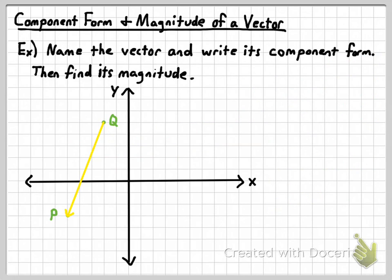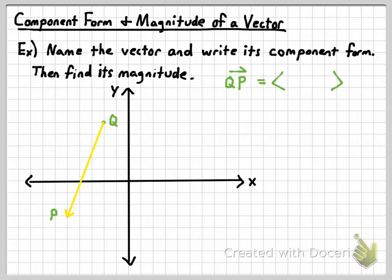Now let's do another example. Again, we're going to name this vector, write its component form, and find its magnitude. The name of the vector is easy — you look at the direction the vector is going and notice that Q is the initial point and P is the terminal point, so this is vector QP. For the component form, always put the horizontal component first, then the vertical component. This is not slope — it's not rise over run. The horizontal component: you go left three units, so the horizontal component is negative three.